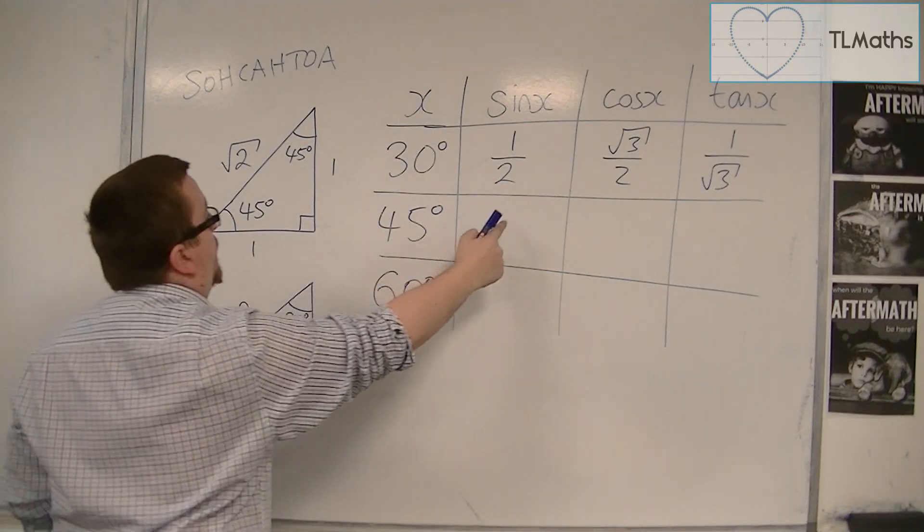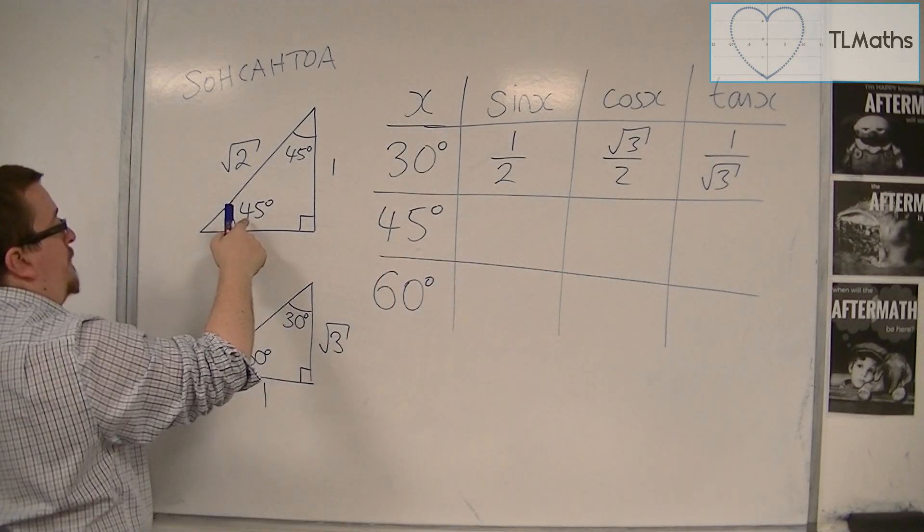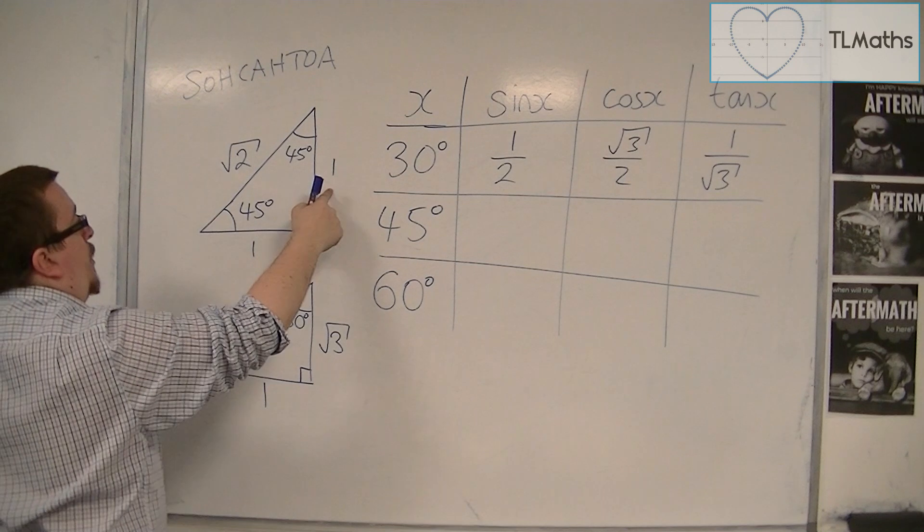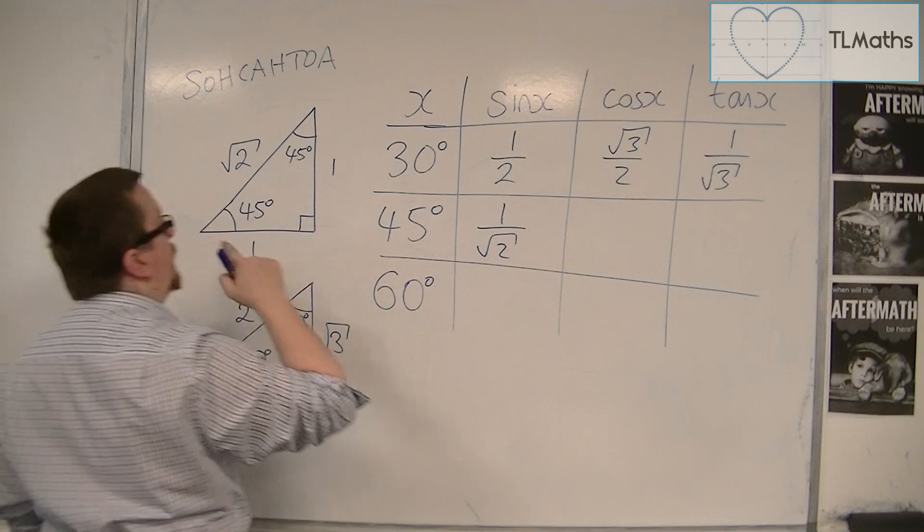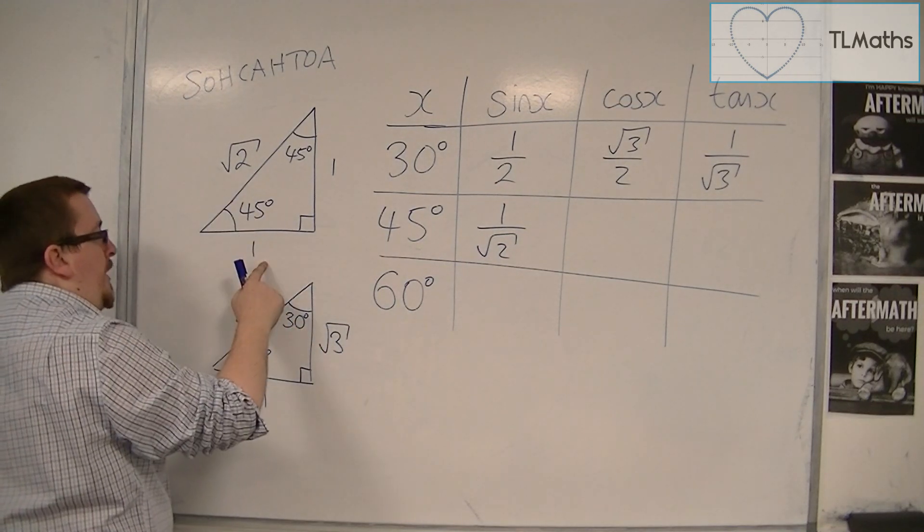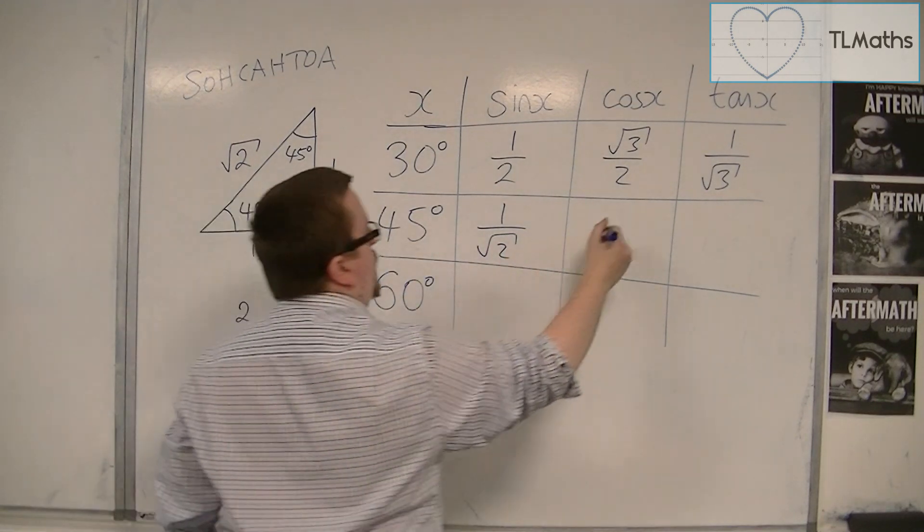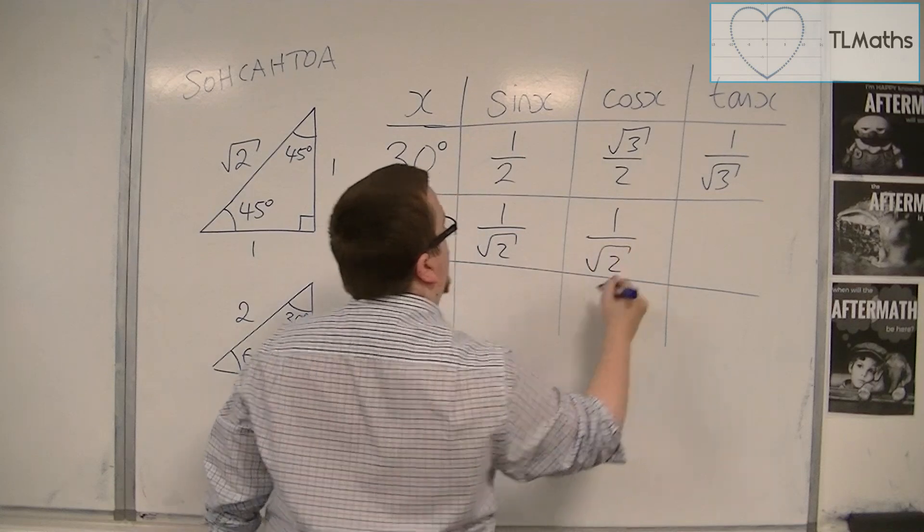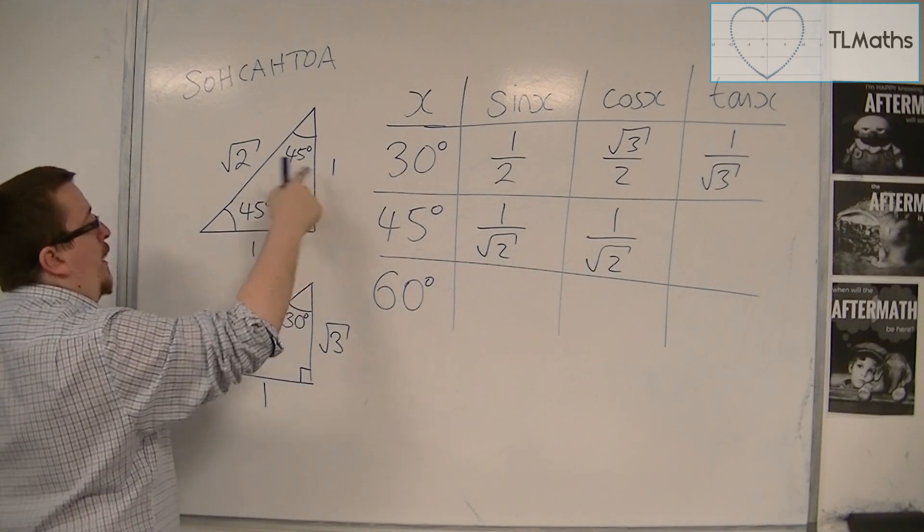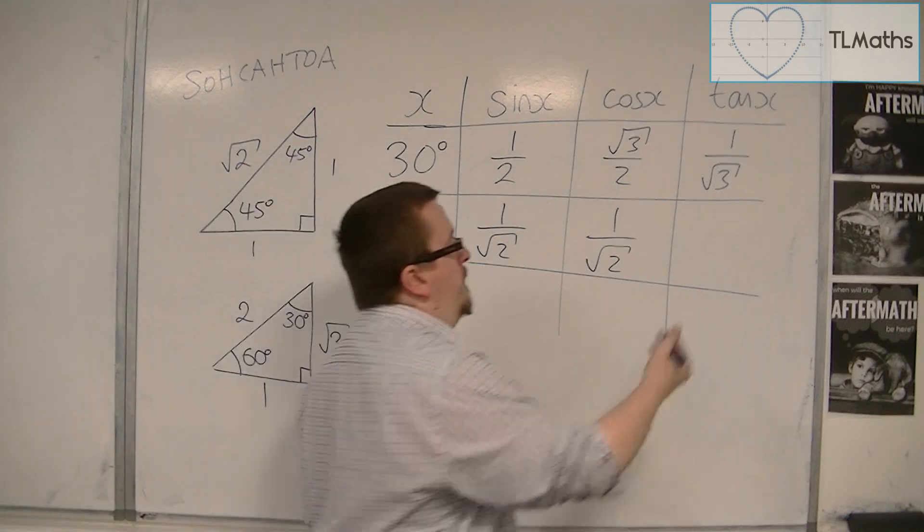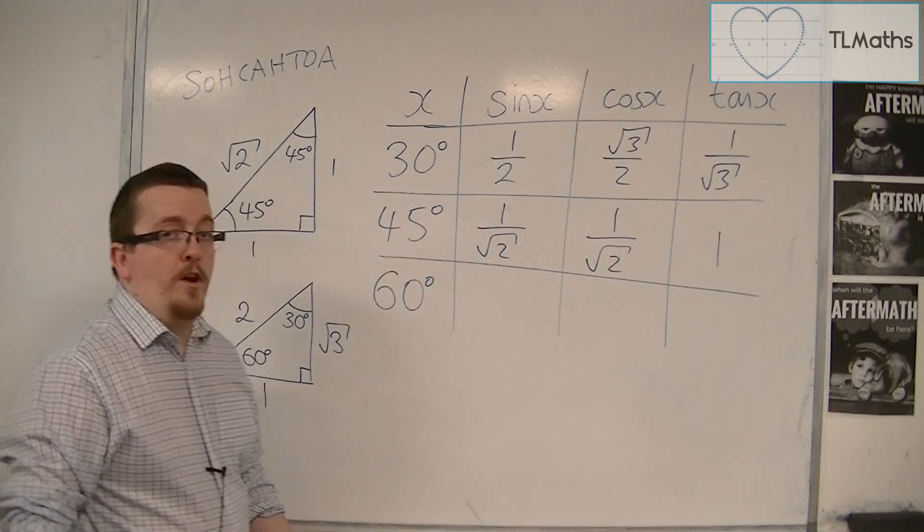Sine of 45, well, here's a 45 degree angle. That's the opposite then. That's the hypotenuse. So that's 1 over root 2. Cos of 45 is the adjacent over hypotenuse. So 1 over root 2 again. Tan of 45 is opposite over adjacent. So 1 over 1.